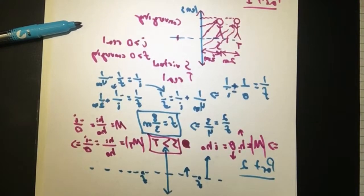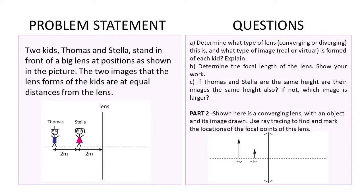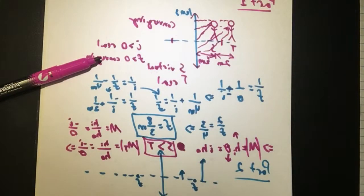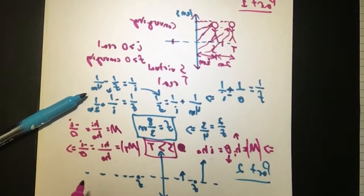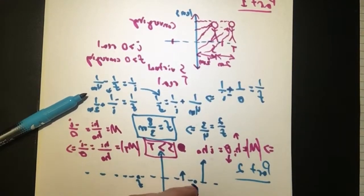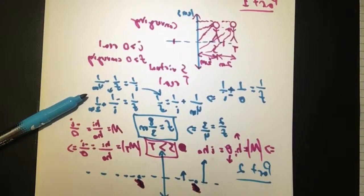Okay, that is part one. Let's take a look at question two. Shown here is a converging lens with an object and its image drawn. Use ray tracing to find and mark the locations of the focal points of this lens. First of all, we need to figure out which of these is the object and which one is the image.